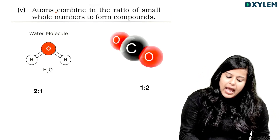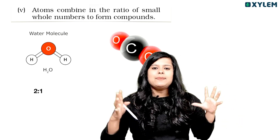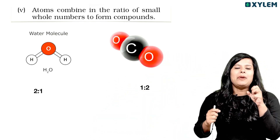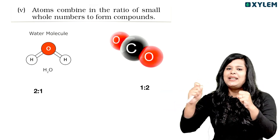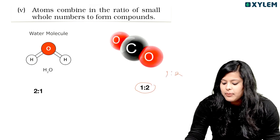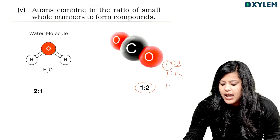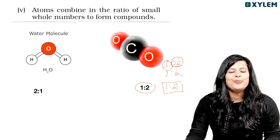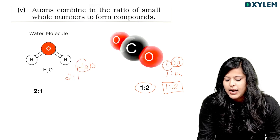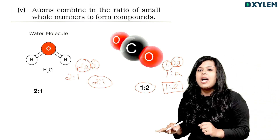Atoms combine in the ratio of small whole numbers to form compounds. For example, carbon dioxide: carbon has 2 oxygen atoms, so the ratio is 1 to 2, because CO2 has one carbon and two oxygen. For H2O, one oxygen and 2 hydrogen gives a ratio of 2 to 1. That is how we find the ratio of atoms.